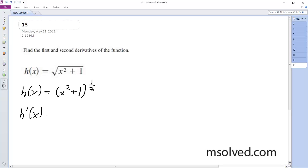So h prime of x is going to be equal to 1 half, use the chain rule, times the derivative on the inside which is 2x, and this becomes x squared plus 1 raised to the negative 1 half. We just end up with x quantity x squared plus 1 raised to the negative 1 half.